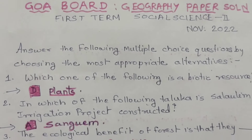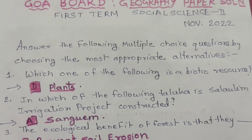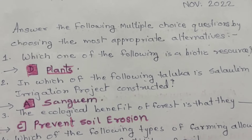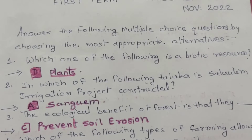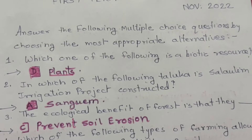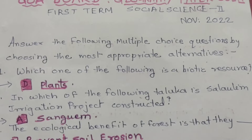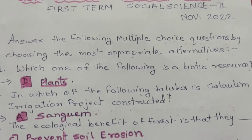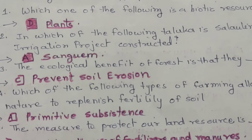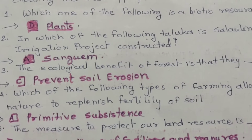Answer the following multiple choice questions choosing the most appropriate alternative. Question 1: Which one of the following is a biotic resource? The answer is option D — plant. Question 2: In which of the following taluqa is the Salalim irrigation project constructed? The answer is option A — Sungam.